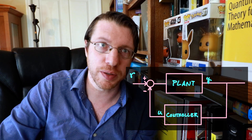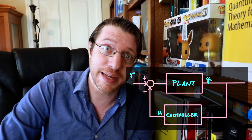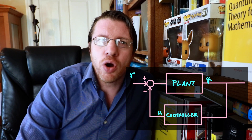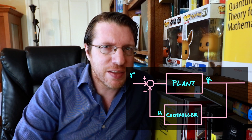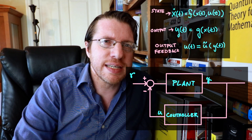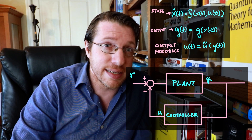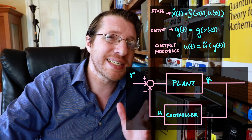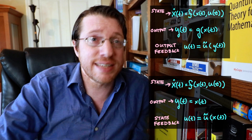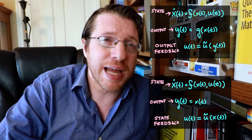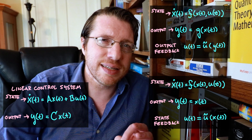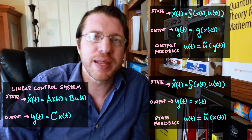A state feedback controller is a controller that utilizes the system state in its decision making, whereas an output feedback controller incorporates only the system output. Mathematically, we write these feedback control systems where a state feedback controller can be expressed by setting the output to the state itself. Initially, our study will be isolated to linear systems, where we will replace the dynamics with a matrix equation.